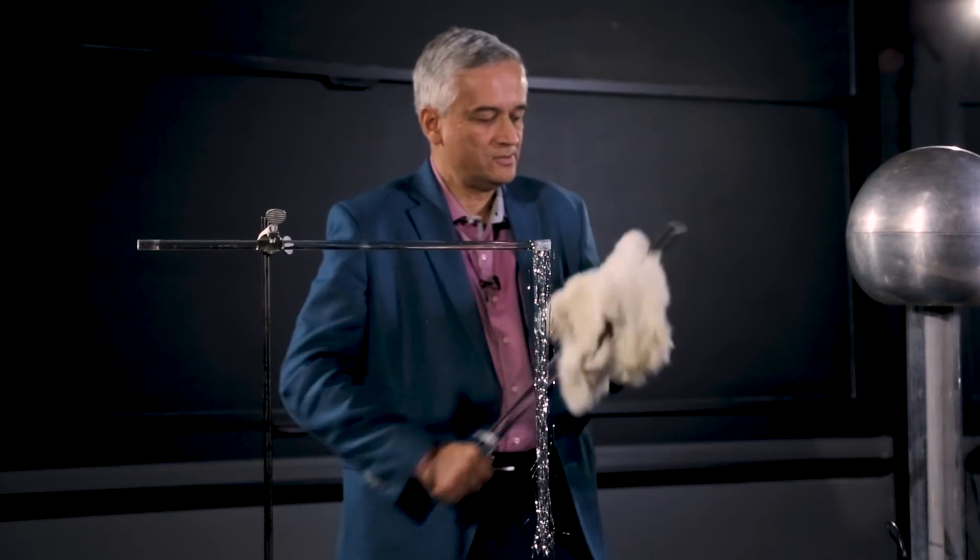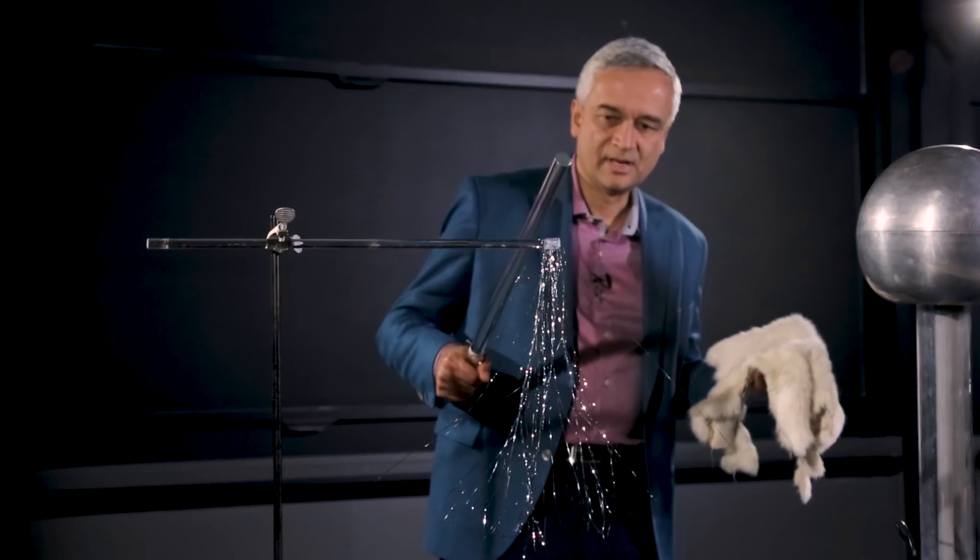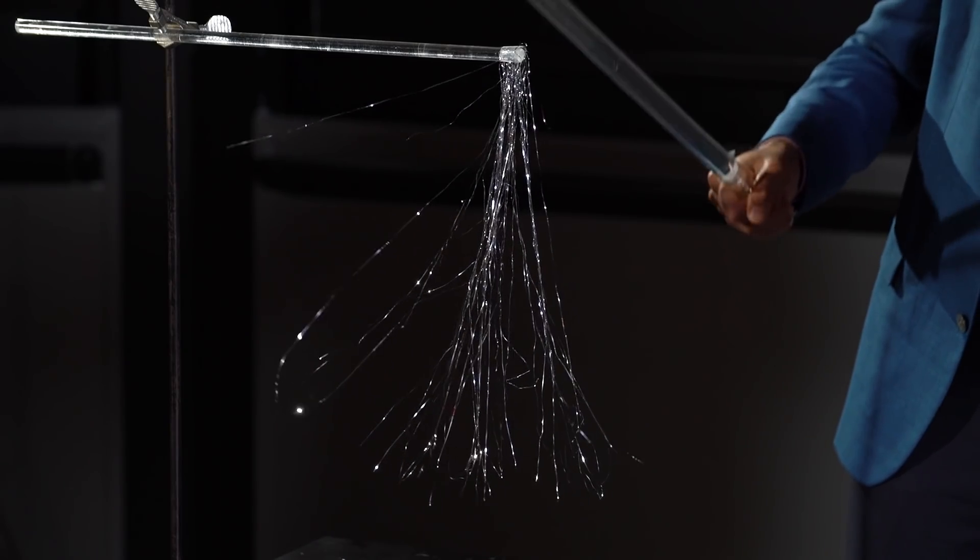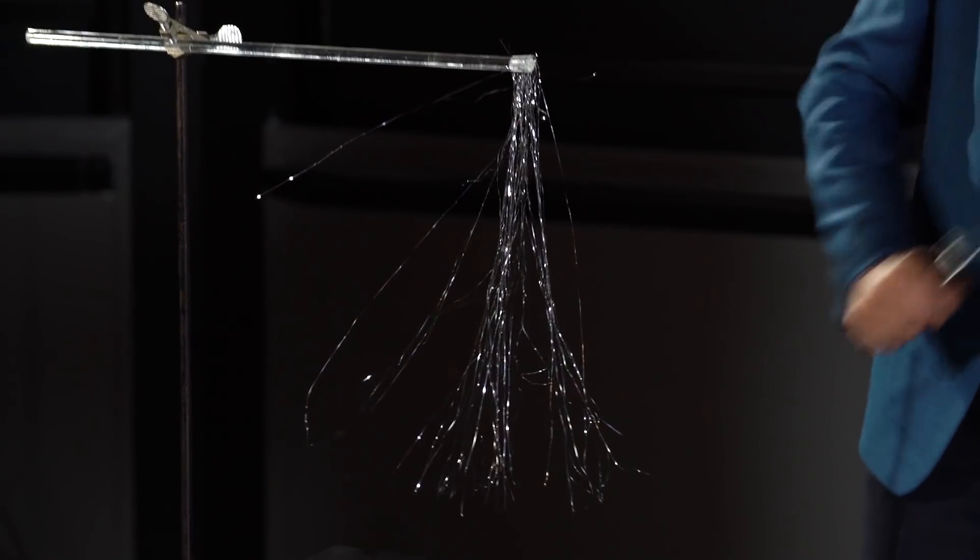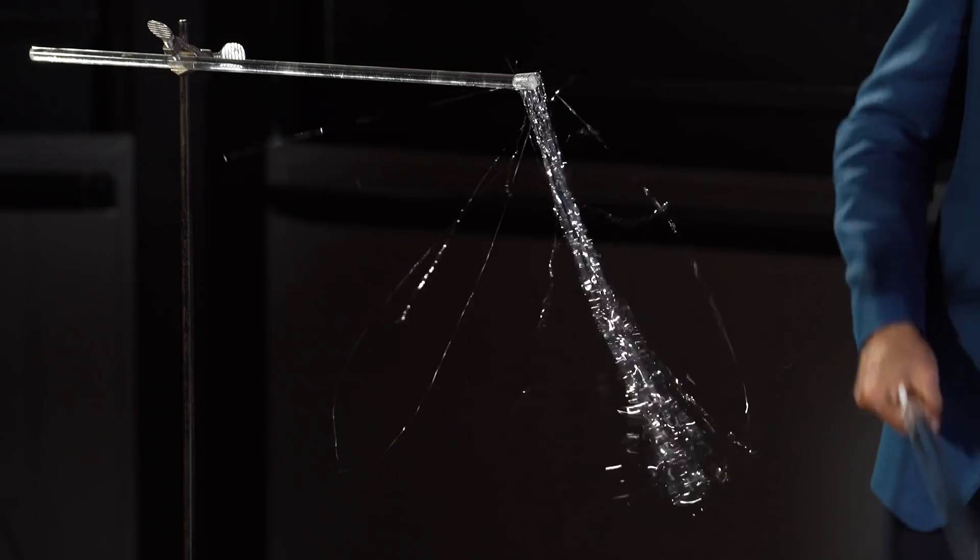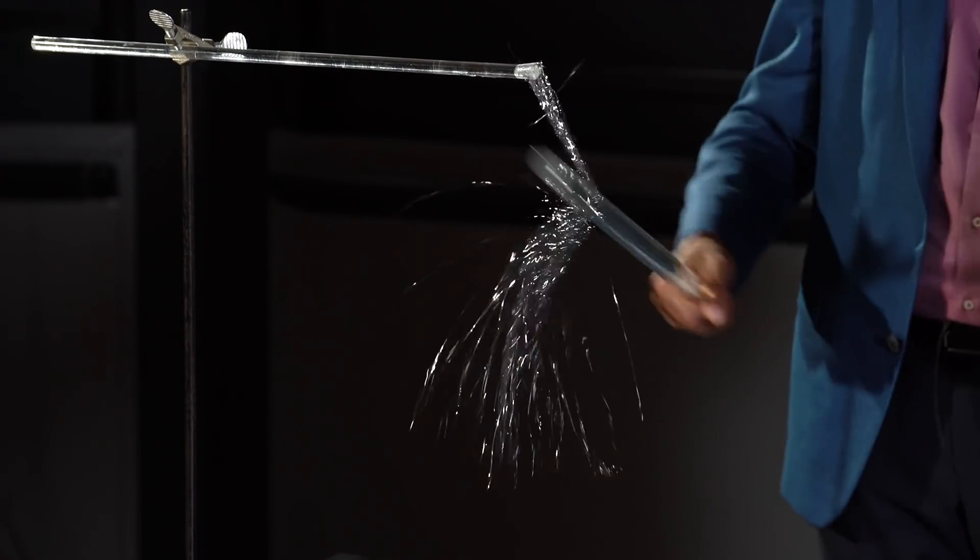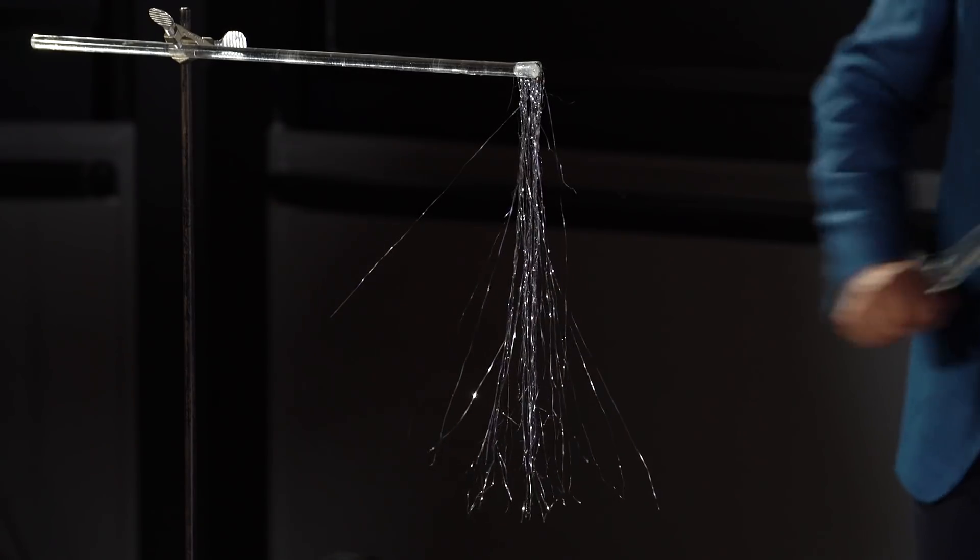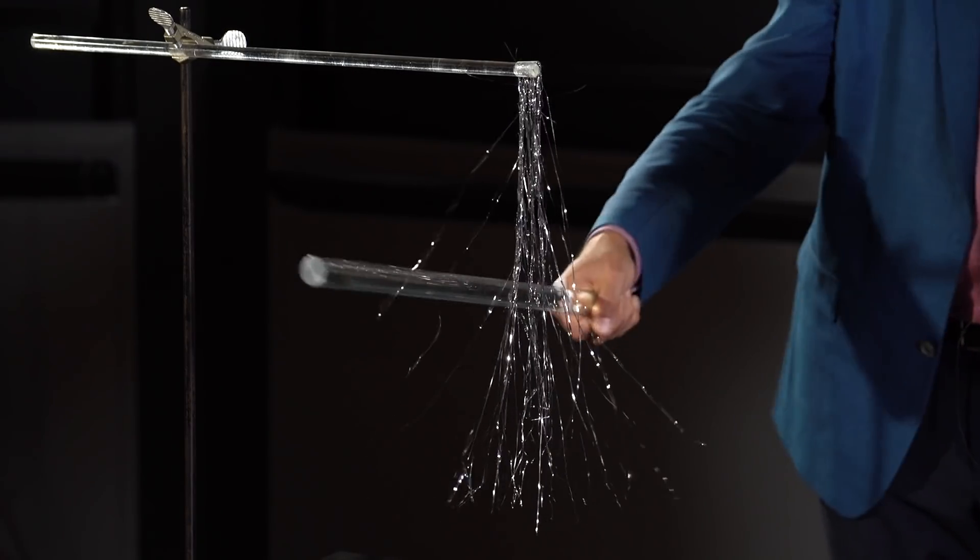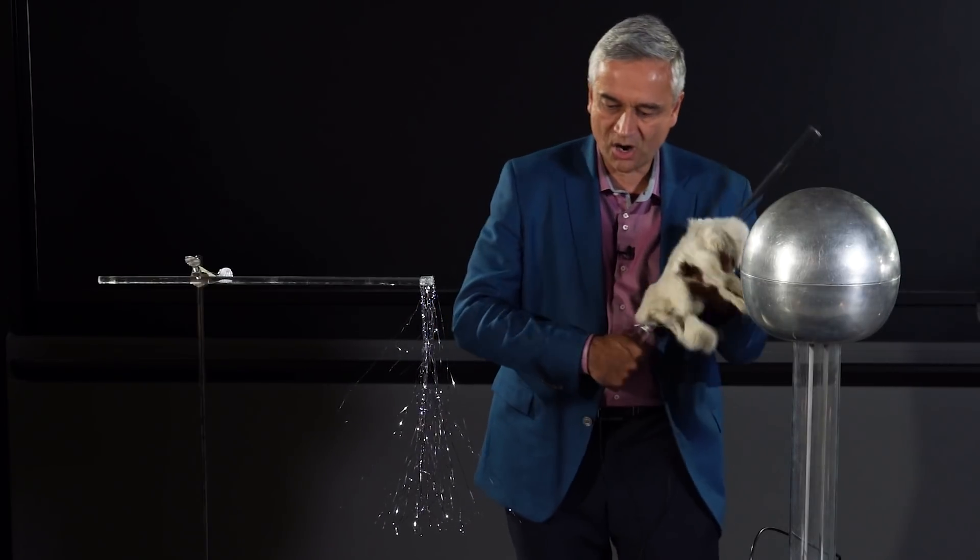So how am I going to convince you that this object is now charged? Well I'm going to do that by bringing it near the tinsel. You see the tinsel reacting to the presence of the rod. In fact, I'm going to transfer some charge from the rod onto the tinsel, and if you look at the tinsel now, you will see that the different strands of tinsel are being pushed away from each other.